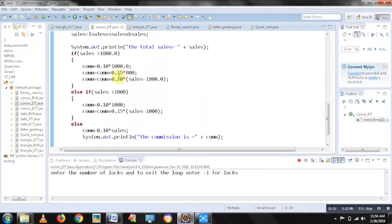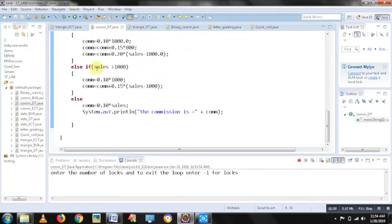Next, I would be interested in computing the commission. If sales is greater than 1800, I have to apply 20% of commission. That is 10% on first 1000, 15% on next 800 and 20% on whatever is remaining. Likewise, if sales is greater than 1000, 10% on first 1000 and 15% on whatever is remaining. Lastly, if sales is less than 1000, I have to apply 10% commission.